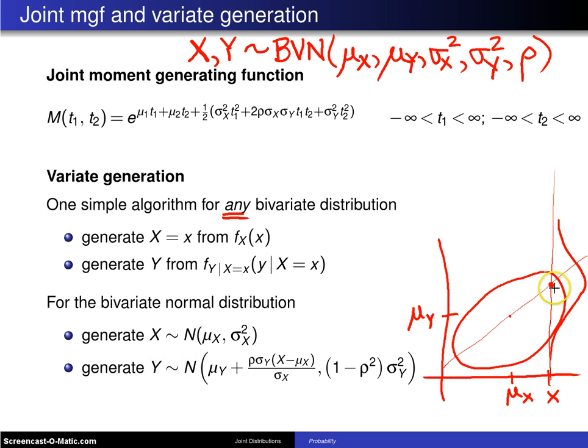So for example, if X is generated here, maybe you generate your Y value right here. This is the bivariate random variable pair (X, Y) that is generated by this particular algorithm.